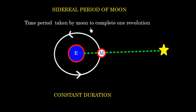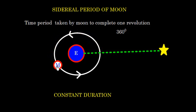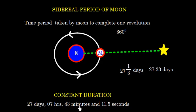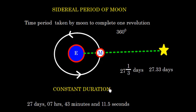Now let us discuss the sidereal period of the Moon — the time taken by the Moon to complete one full revolution around the Earth. We take a reference star at a very far distance; the Moon starts in line with that star, completes one full 360-degree revolution, and returns to alignment with the star. This duration is 27 and 1/3 days, or 27.33 days — more precisely 27 days, 7 hours, 43 minutes, and 11.5 seconds.